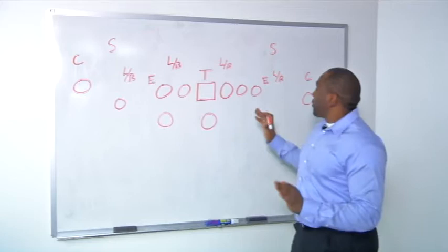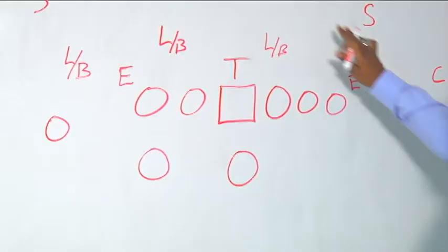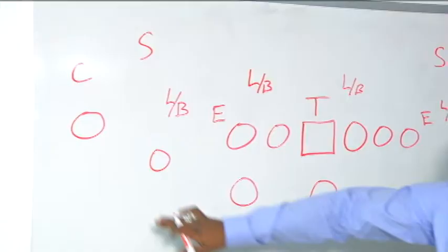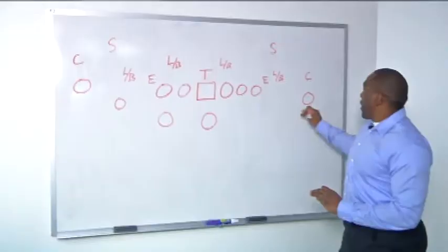Now, what the Baltimore Ravens are in is a 3-4 defense. Three down linemen: you have your end, tackle, another end, and then four linebackers. You have your two safeties. You have your corners guarding the two wide receivers.